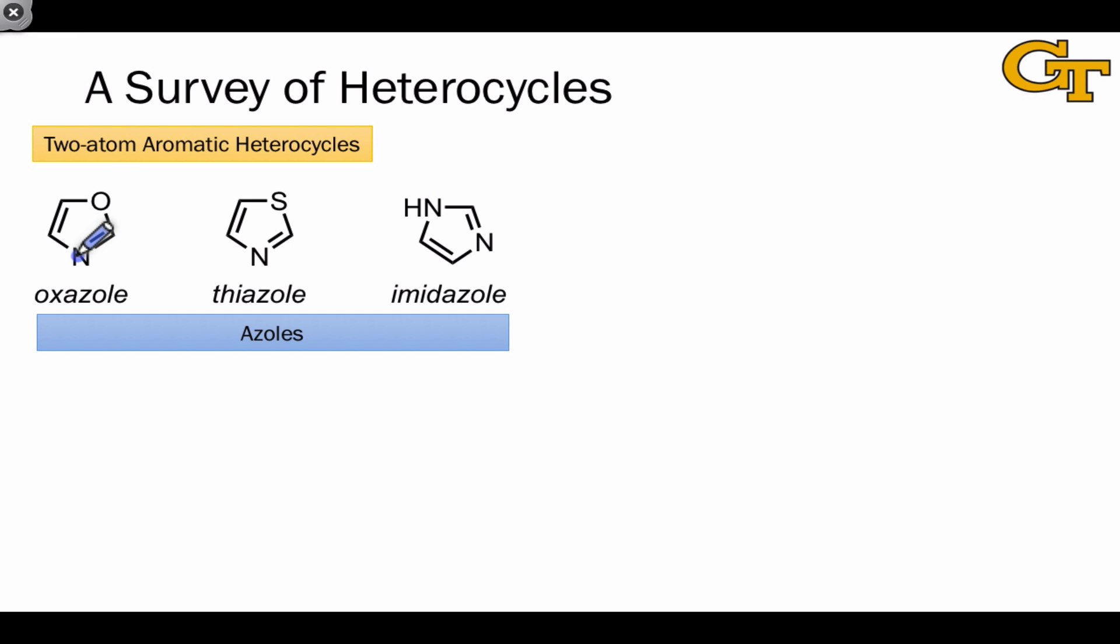All of the azoles include the carbon-nitrogen double bond within their structures, which we've seen as an electron-withdrawing group. But they also include a hetero atom that's either an O2, S2, or N3 that we would consider electron donating. So in terms of electron density, roughly speaking, we might expect these to be about as electron-dense as benzene.